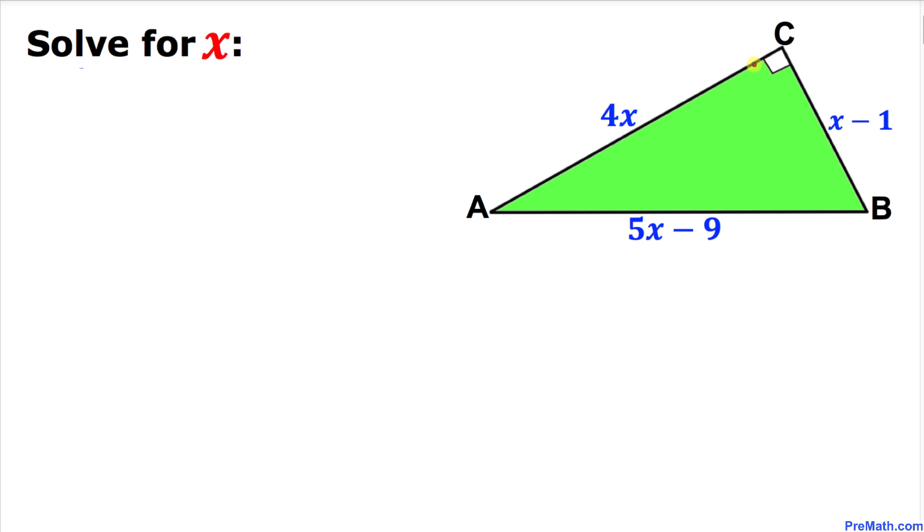We can see that angle C is 90 degrees, which means triangle ABC is a right triangle. Therefore, we are going to use the Pythagorean theorem. Here's our Pythagorean theorem: a squared plus b squared equals c squared.